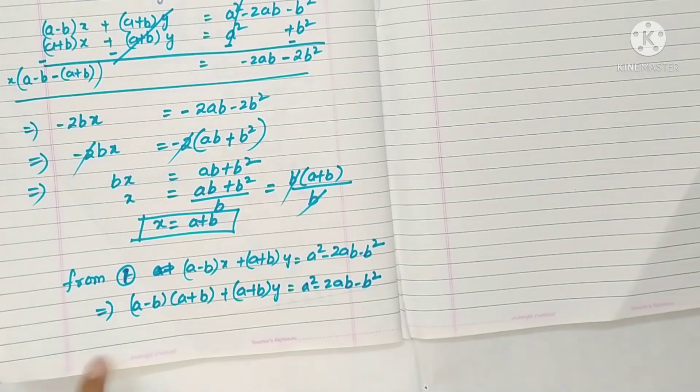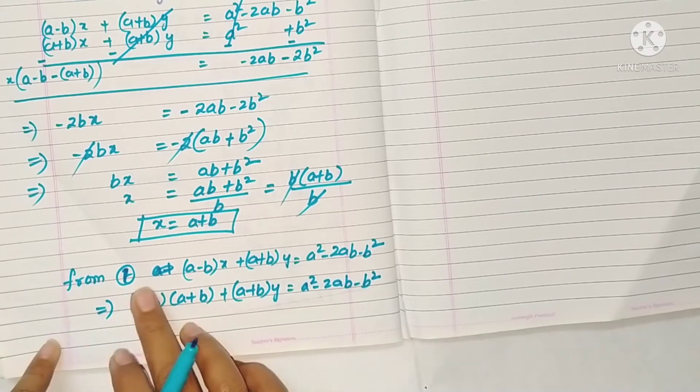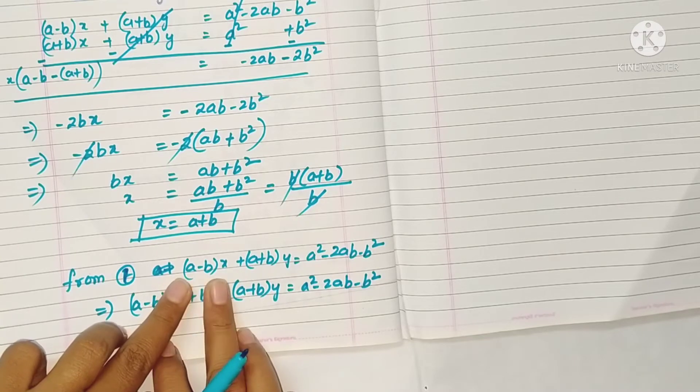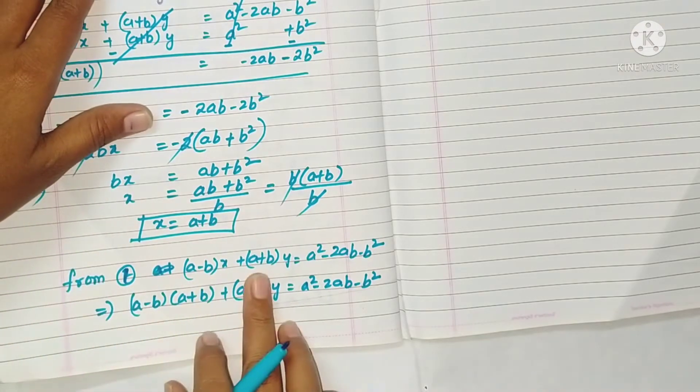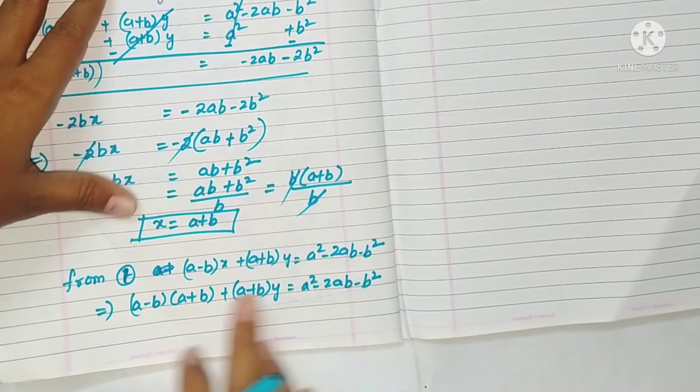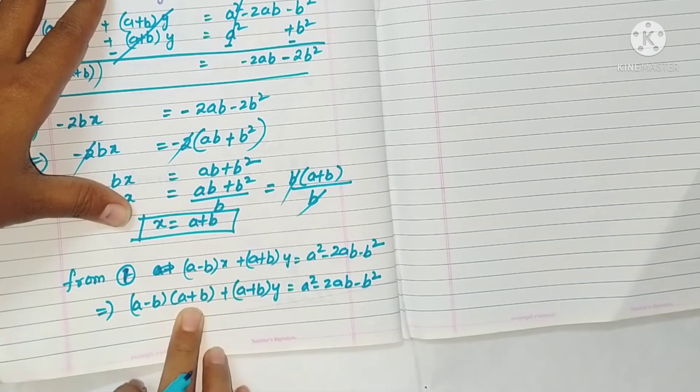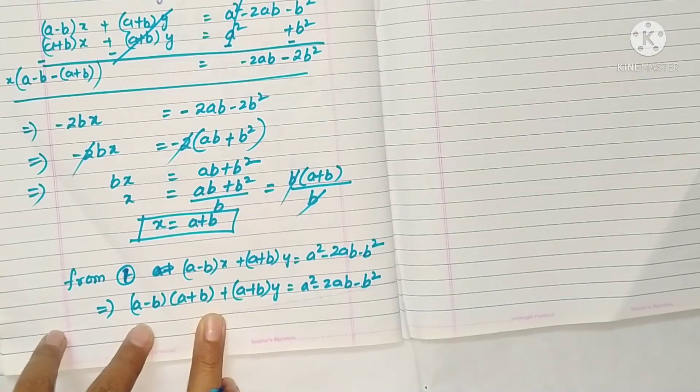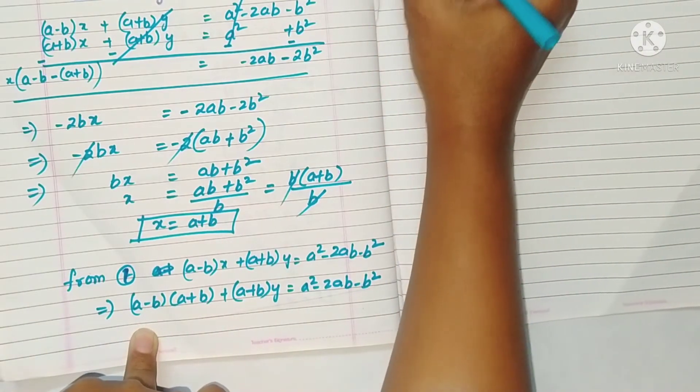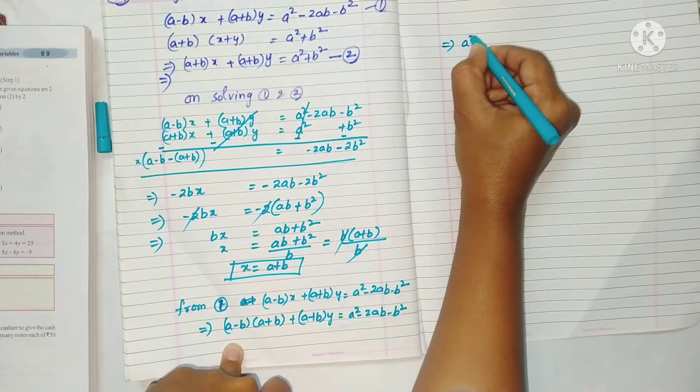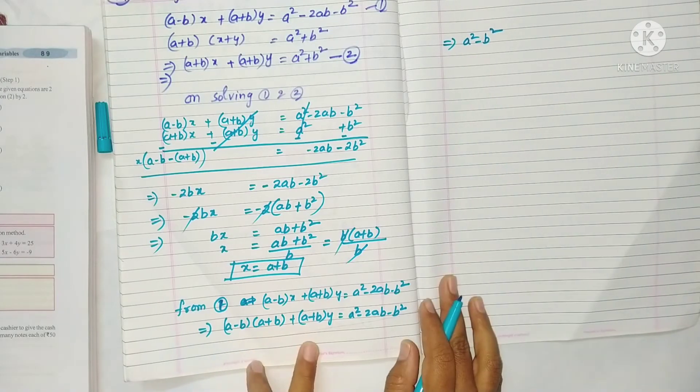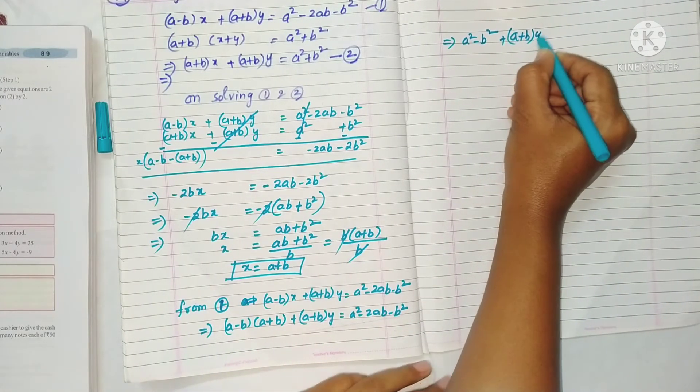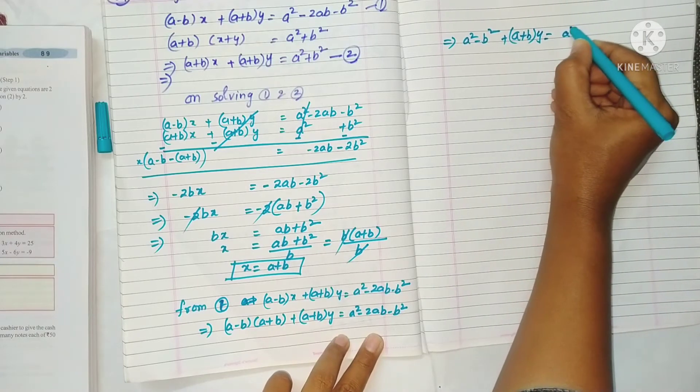So to calculate y value, I am taking equation 1. Equation 2 you can also use. So equation 1 is (a-b)x plus (a+b)y equals a² - 2ab - b². Now substitute x equals a+b. See, (a-b) times (a+b) is a² minus b². So I am writing here a² minus b² plus (a+b)y is equal to a² minus 2ab minus b², okay?